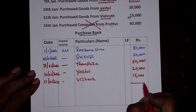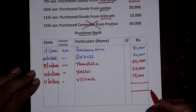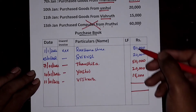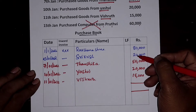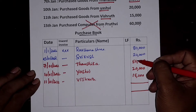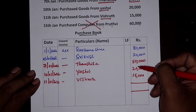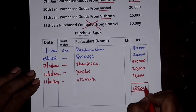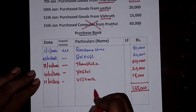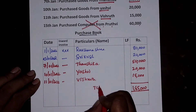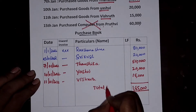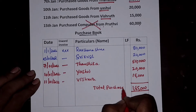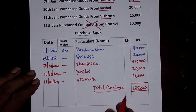The total credit purchases: 80,000 + 20,000 = 1,00,000 + 50,000 = 1,50,000 + 20,000 = 1,70,000 + 15,000 = 1,85,000. The overall total credit purchase is Rs. 1,85,000.